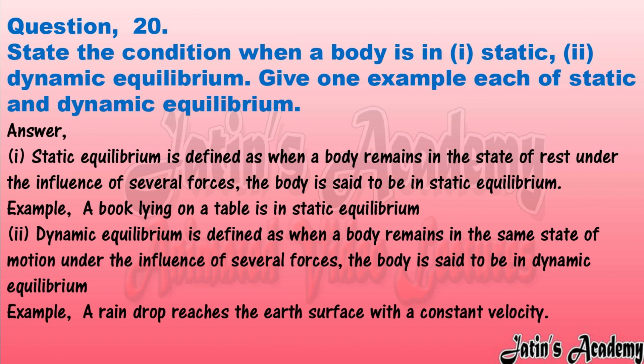Question twenty: state the conditions when a body is in (1) static and (2) dynamic equilibrium. Give one example each. Answer: (1) Static equilibrium — when a body remains in the state of rest under the influence of several forces, the body is said to be in static equilibrium. (2) Dynamic equilibrium — when a body remains in the same state of motion under the influence of several forces, the body is said to be in dynamic equilibrium. Example: a raindrop reaches the earth's surface with a constant velocity.